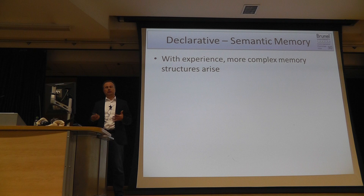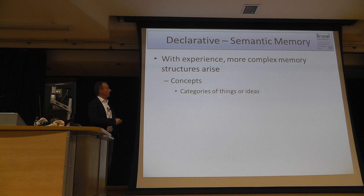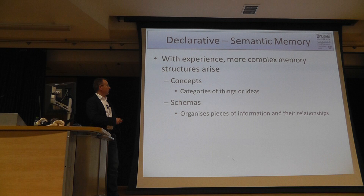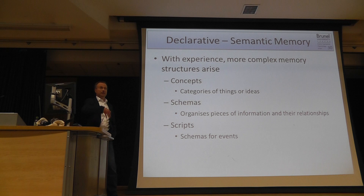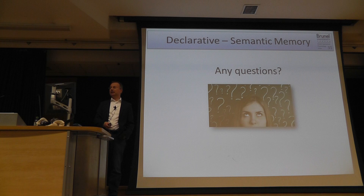Scripts are learned, which explains cultural confusion — in some countries you must call the waiter to order; in others the waiter always comes and it would be impolite to beckon them. These differences arise from culturally specific learning. Scripts allow us to automatically behave appropriately — for instance, we automatically become quiet when entering a library.